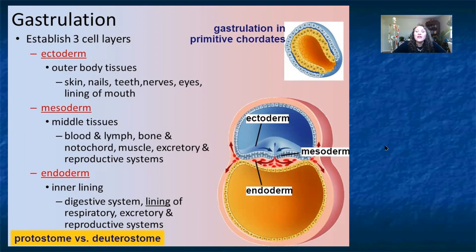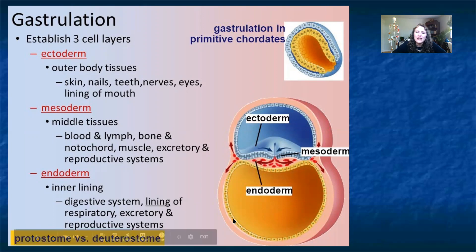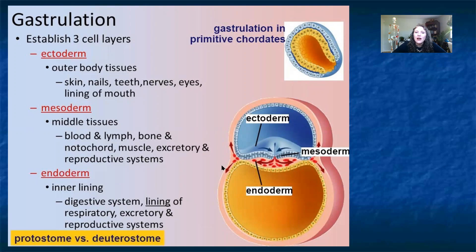The disc formed has a top layer called the ectoderm, which develops into body tissues like skin, nerves, teeth, and eyes. In between is the mesoderm — everything you think of as being inside you: organs, blood, lymph, bones, and spinal cord. Beneath that, the yellow endoderm portion becomes the inner lining of your digestive system — the inner part of the tube that makes you up.